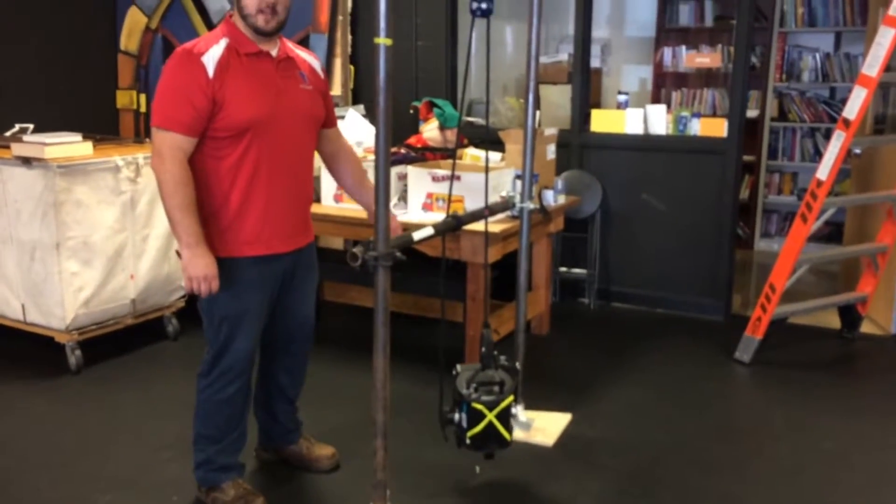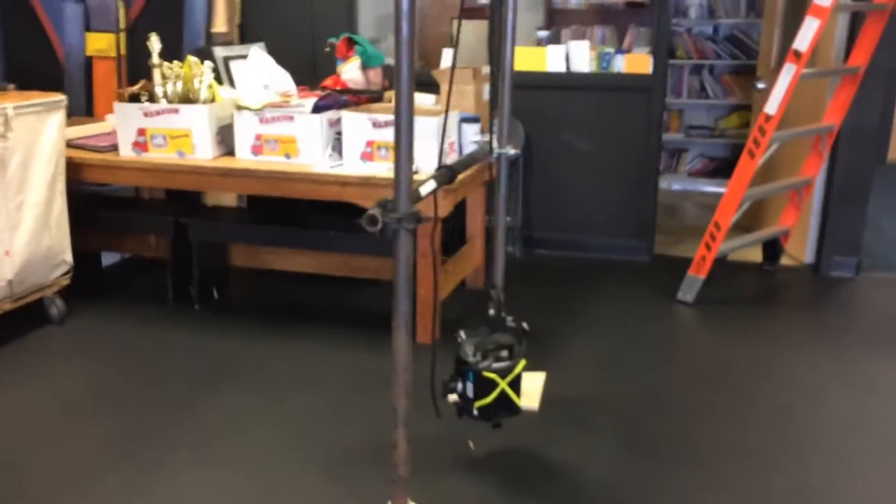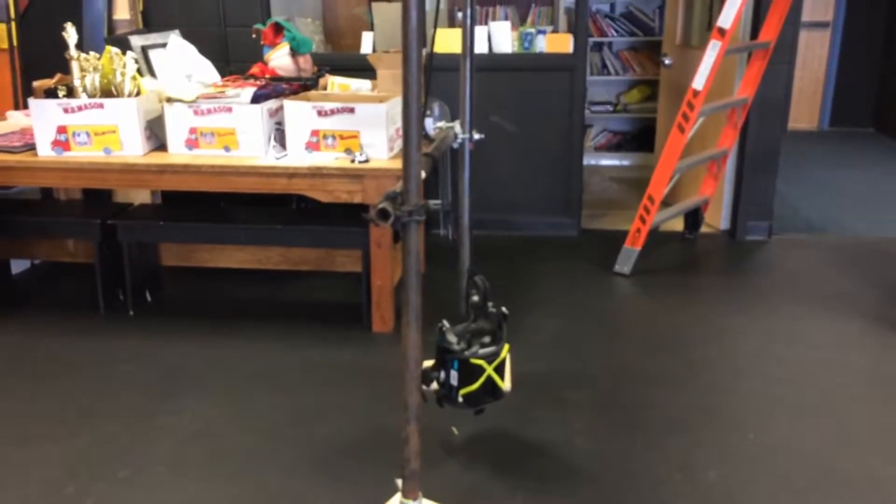This is what it should look like with the lighting fixture off the ground when you're done. And that's how you tie and rig.